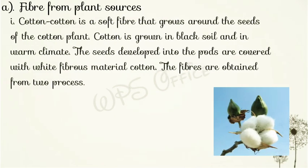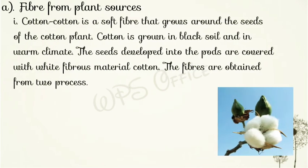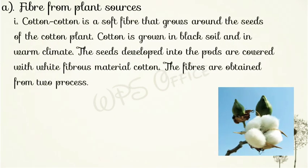Cotton is a soft fiber that grows around the seeds of the cotton plant. Cotton बहुत ही मुलायम रेशा होता है जो cotton plant की फली के अंदर जो बीज बनता है, pod के अंदर जो बीज बनता है, उसको चारों ओर से घेरे हुए रहता है। Cotton is grown in black soil and in warm climate — काली मिट्टी में और गर्म जलवायु में बहुत अच्छी पैदावार करता है।